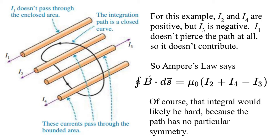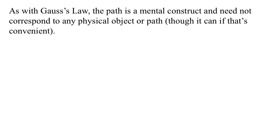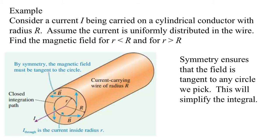We define positive current as the current along the direction given by the right-hand rule applied to the direction of evaluation of the integral. In this case, we're going around the loop in a certain direction, so the positive direction is into the page. For the example here, I2 and I4 are positive because of the right-hand rule, but I3 is negative, and I1 doesn't go through the loop at all, so it doesn't contribute. Ampere's law says integrating B dot dS all the way around gives mu naught times (I2 + I4 - I3).